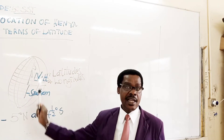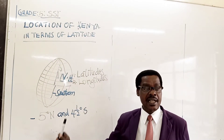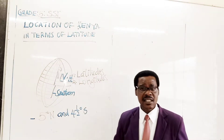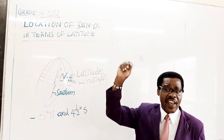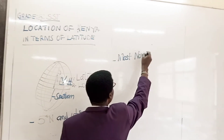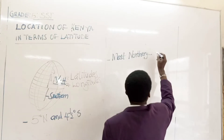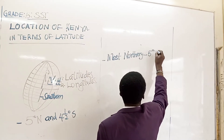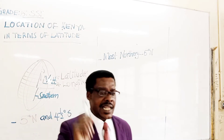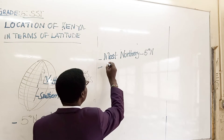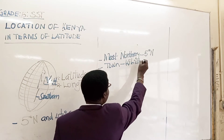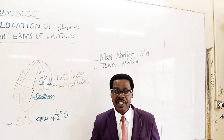The area above the equator is the northern hemisphere, and the area below the equator is the southern hemisphere. The most northern point of Kenya is at five degrees north, and a town known as Kibish is found at this point — five degrees north.